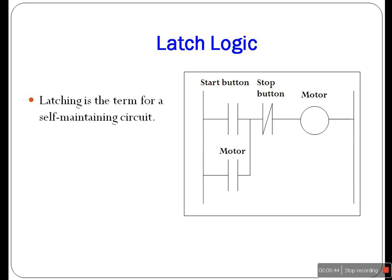Sometimes it is necessary to hold an output energized even when the input is released. A simple example is a motor which is started by pressing a start push-button switch. The switch contact does not remain closed, but the motor is required to continue running until a stop push-button switch is pressed. The latch circuit is used to carry out such an operation — it is a self-maintaining circuit in that after being energized, it maintains its state until another input is received.